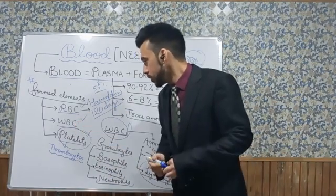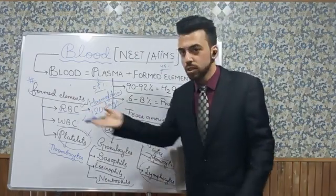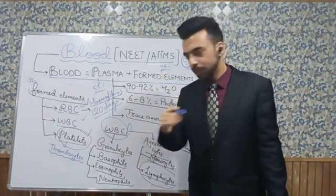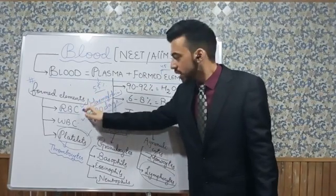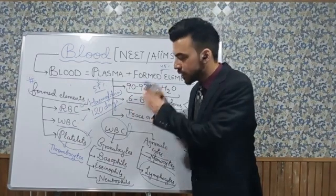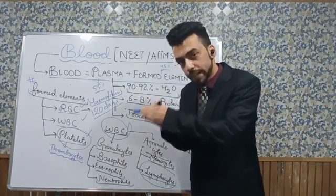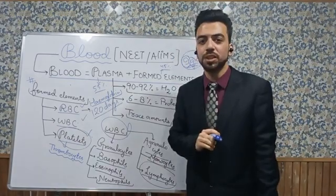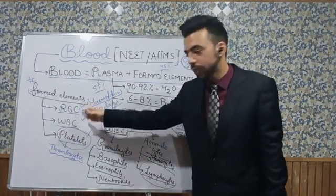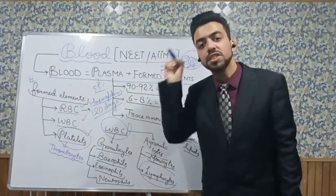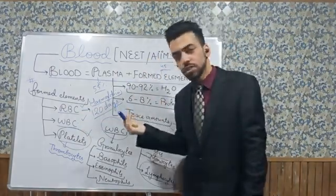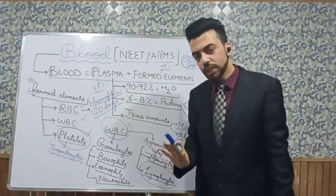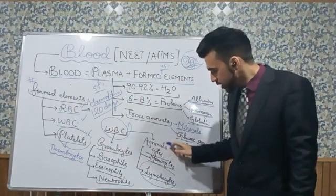Now the WBC cell — the white blood cell. WBC does not have hemoglobin, that's why its color is not red, and we call it the white blood cell, simply called leukocyte. Compared to RBC, the WBC count is about 6,000 to 8,000 per mm³ of blood. The work of RBC is transportation of gases, while the work of WBC is providing defense against disease-causing agents. There are two types of WBC: granulocytes and agranulocytes.